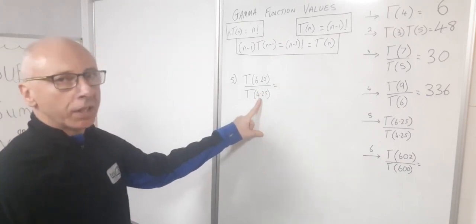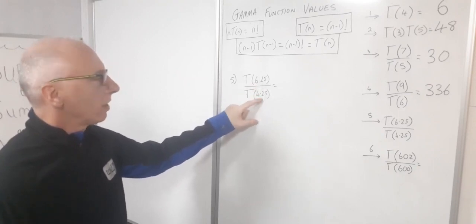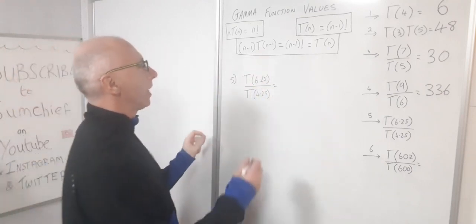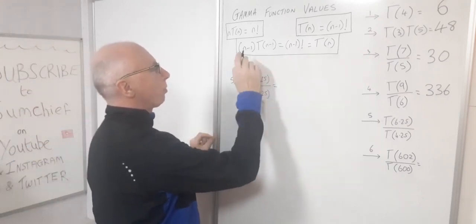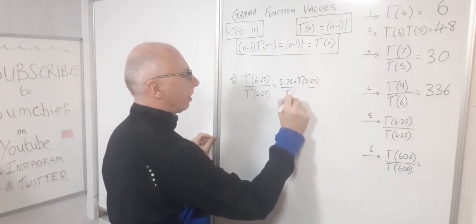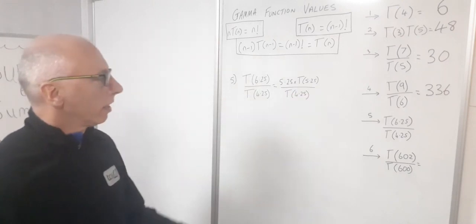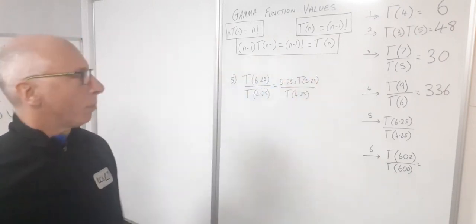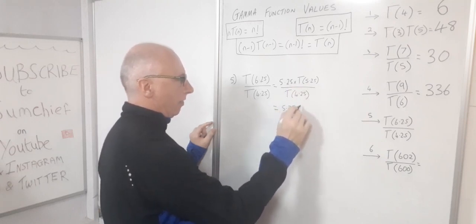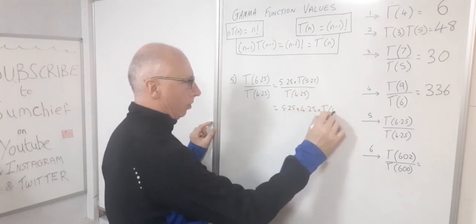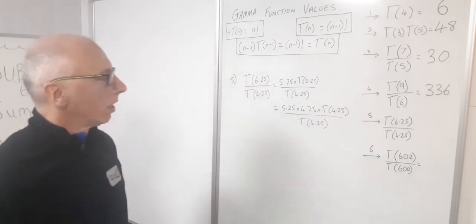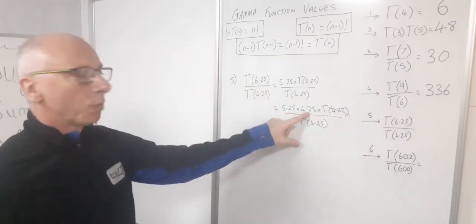So gamma(6.25) = 5.25 times gamma(5.25) over gamma(4.25). Breaking gamma(5.25) down further using the same property gives 4.25 times gamma(4.25). That's very handy because the gamma(4.25) terms cancel. Now I need to work out 5.25 times 4.25.